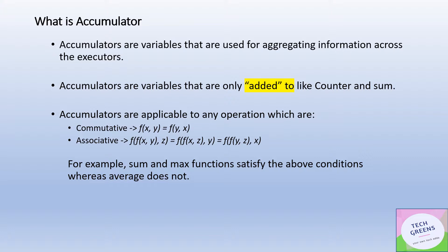To reiterate: accumulators provide shared variables that can talk across different executors and tasks running in parallel. They specifically support only 'add-to' kind of operations, meaning the operations must follow commutative and associative properties. Summation and max are fine examples of operations that work well with accumulators.